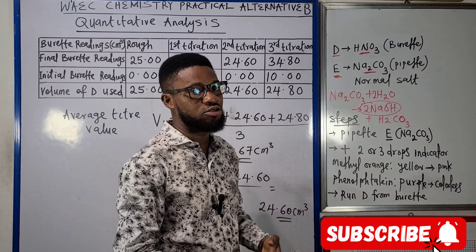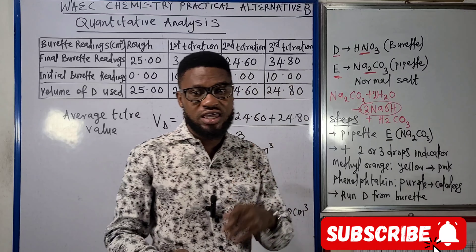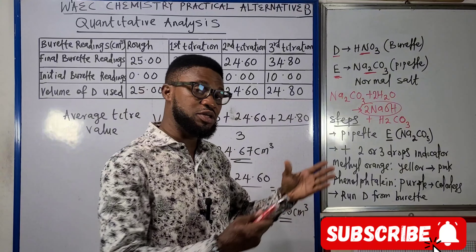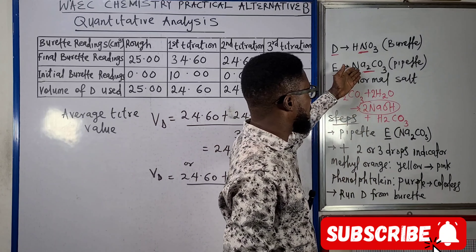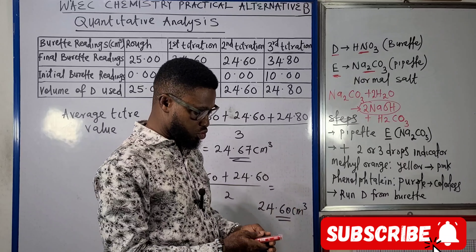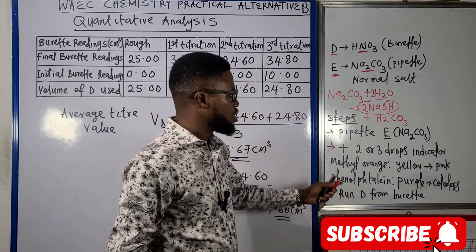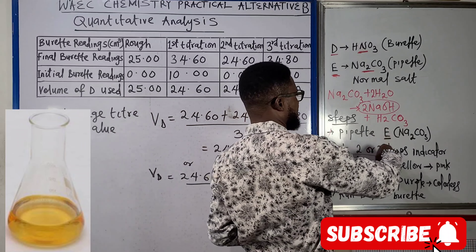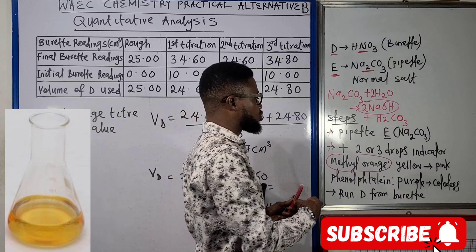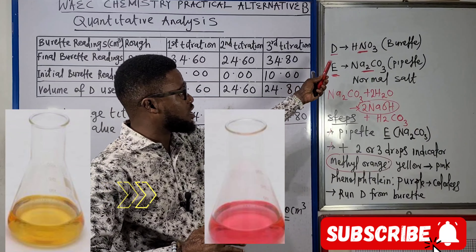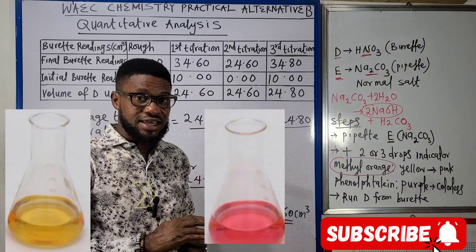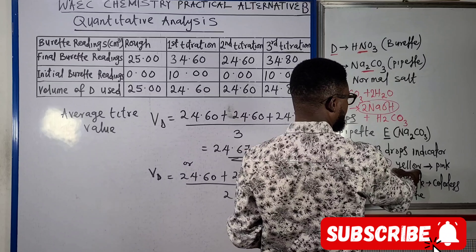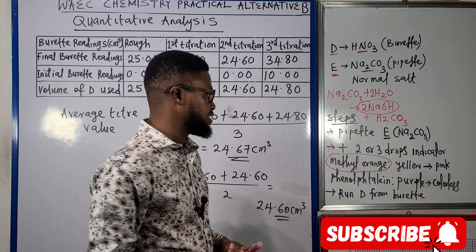This kind of titration looks more like a titration between HNO3 and sodium hydroxide — a strong acid, strong base — so you can use just about any indicator. If you use methyl orange, you pipette 20 or 25 cm³ of sodium carbonate into a conical flask, add two or three drops of indicator. With methyl orange, the color in the sodium carbonate solution will be yellow, and by the time you run the acid from the burette, it changes from yellow to pink.